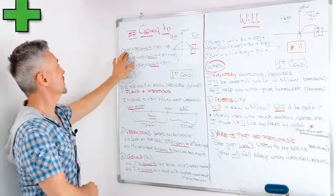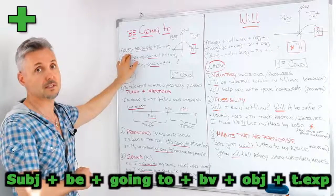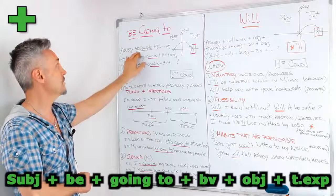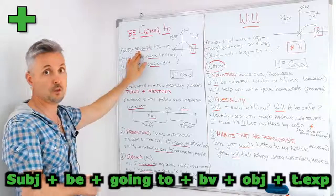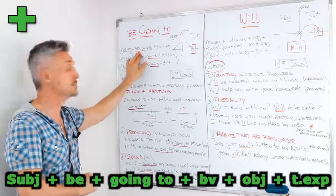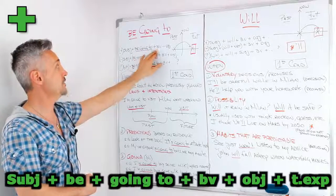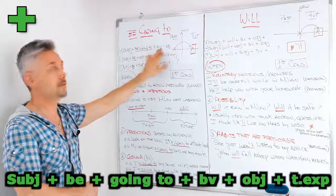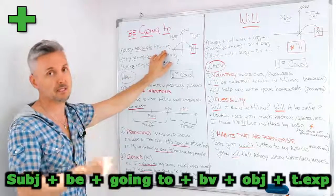We have the subject for a positive sentence, then we have be going to, the verb to be, you need to conjugate it, then we have the base of the verb, then the object and the time expression.